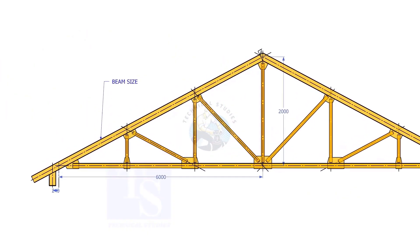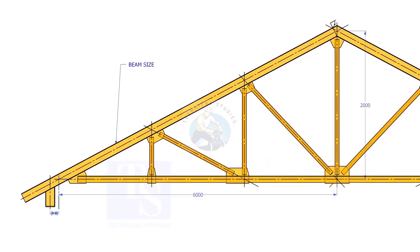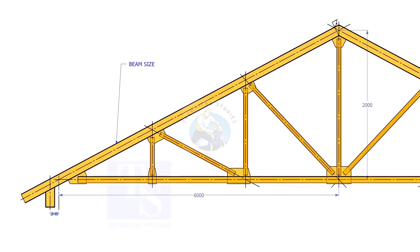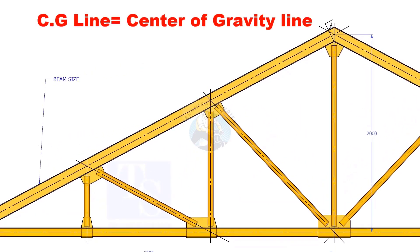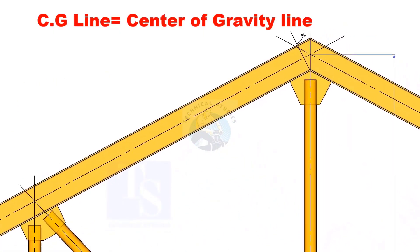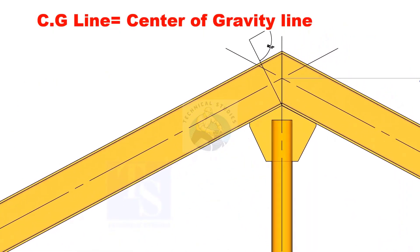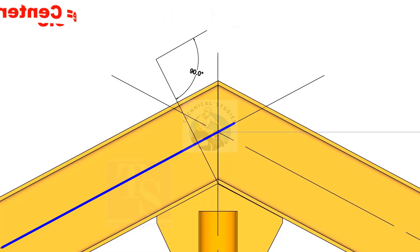Please search in the description for free PDF documents. In the drawing, usually the span and the height through the CG line of a truss are given. Remember that the CG line doesn't pass through the center of all objects — it depends on the shape and cross section of an object.